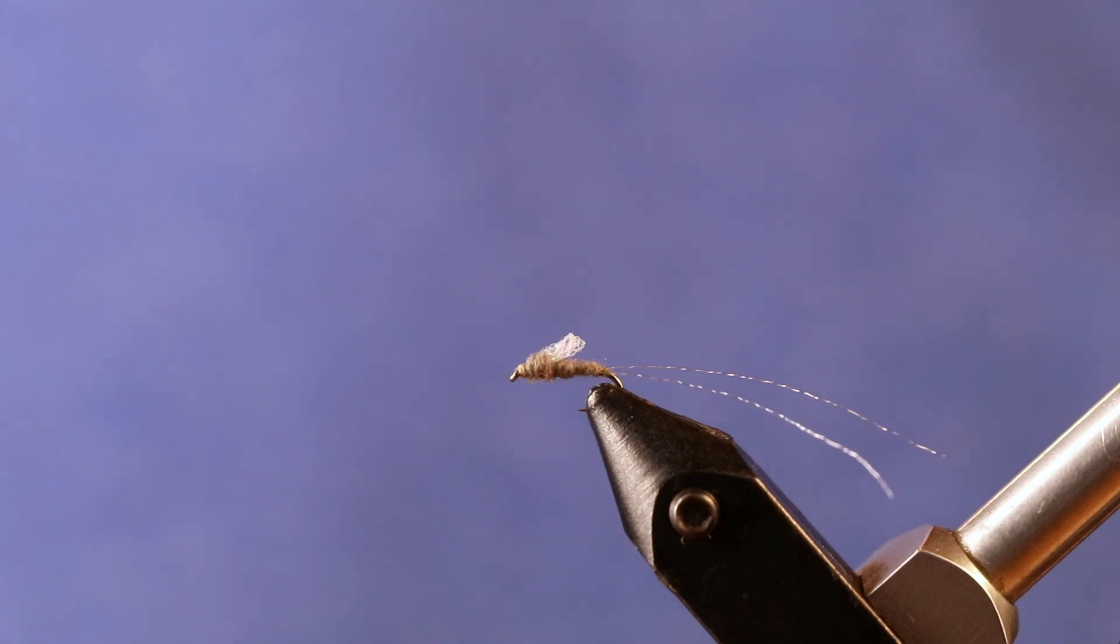Today I'm going to be tying the Sparklewing RS-2. This is a variation of a fly that was originally designed for tailwaters in Colorado, namely the South Platte River. It really works anywhere, in a ton of spots besides there, but if you're trying to impress your friends with actually being able to catch a fish in Cheeseman Canyon, this is a great fly to tie for it.